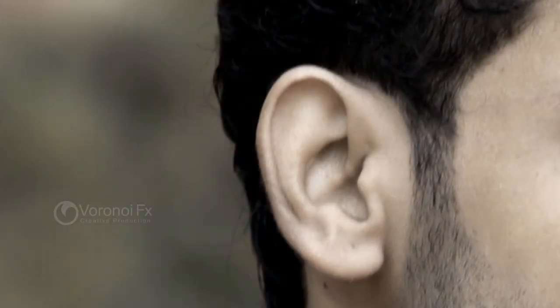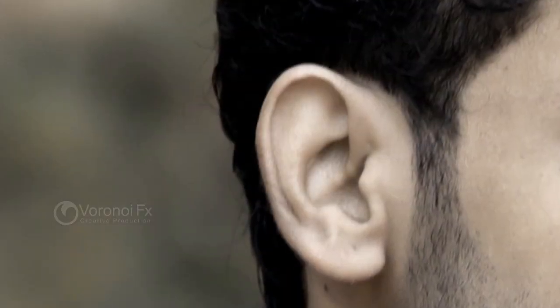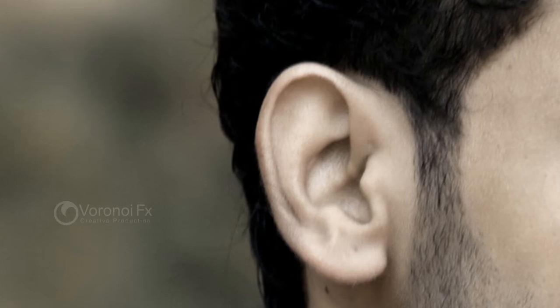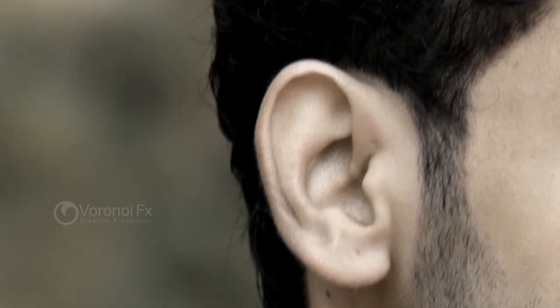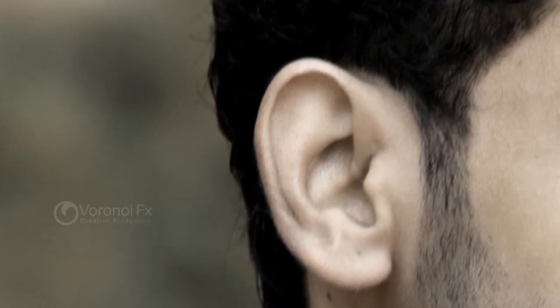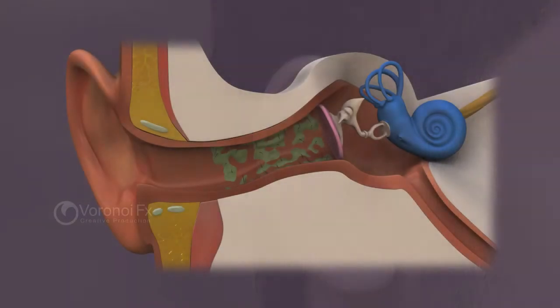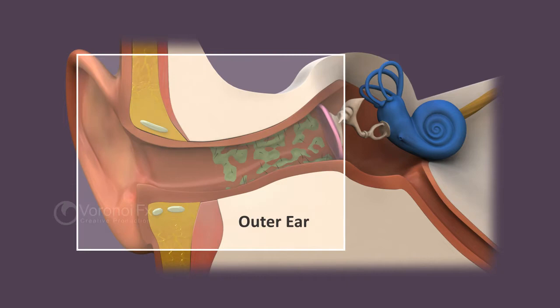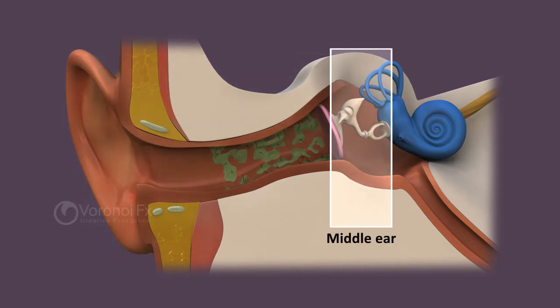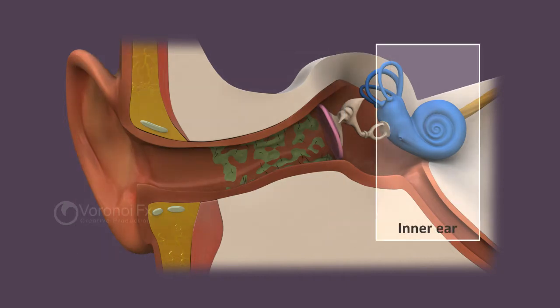The ear is the sound-receiving sense organ. Important parts of the ear are enclosed in the cranium. The ear has three important parts: the outer ear, the middle ear, and the inner ear.